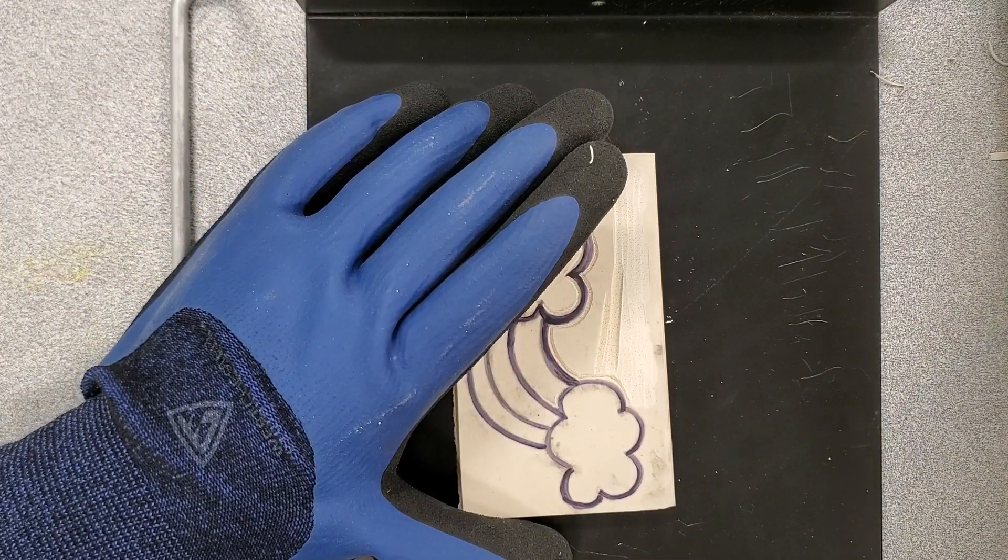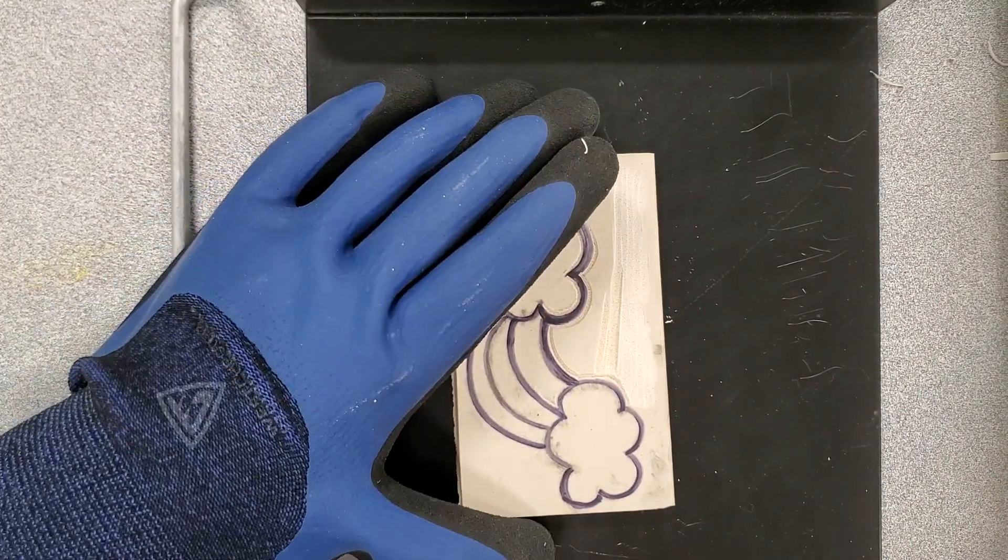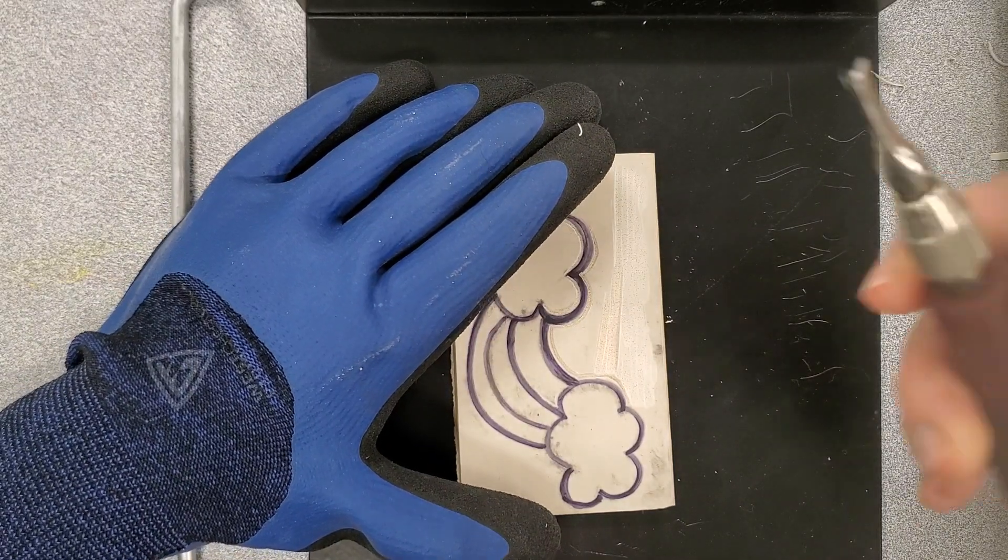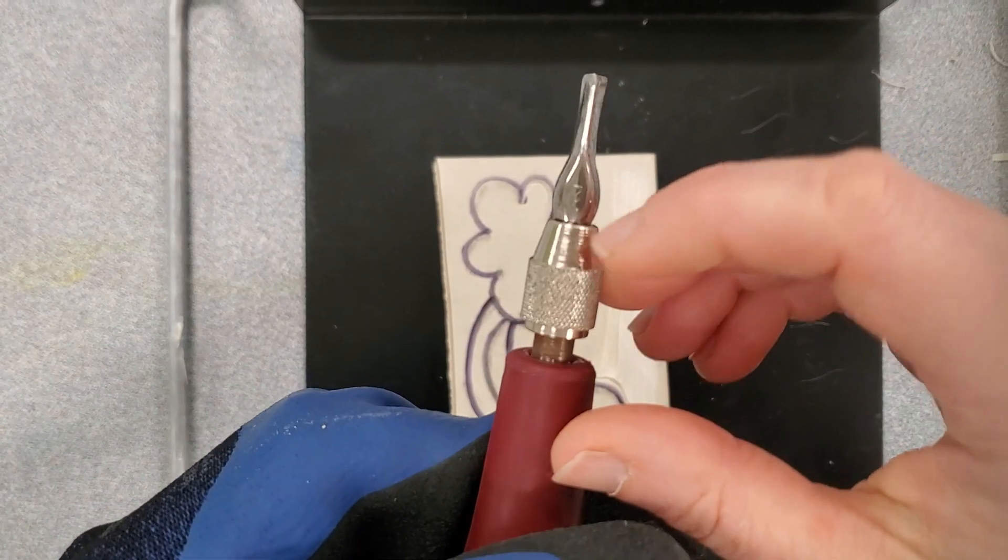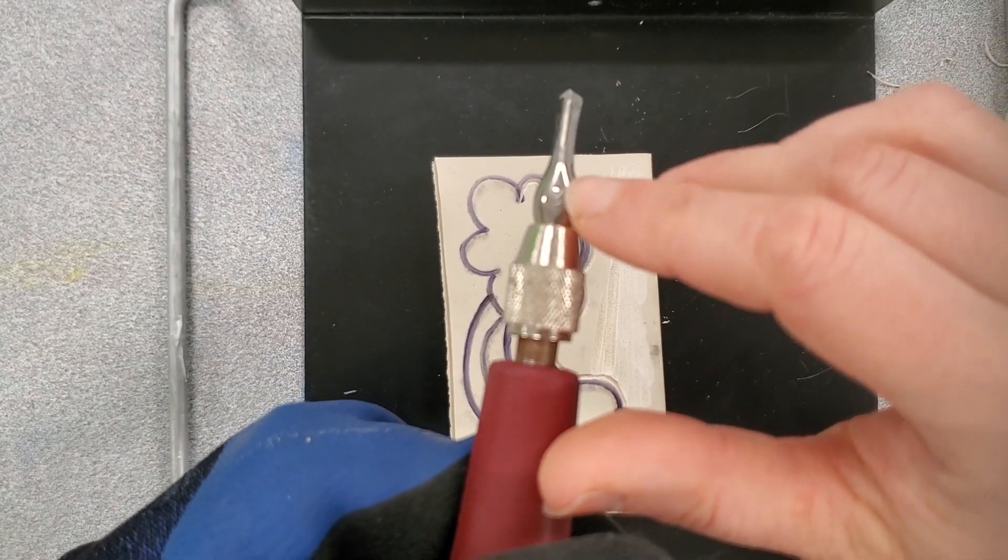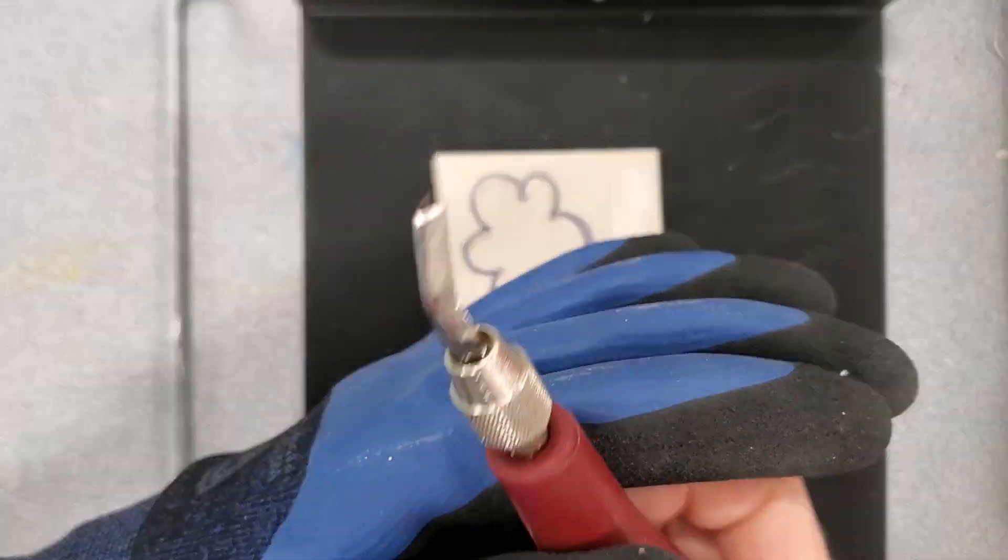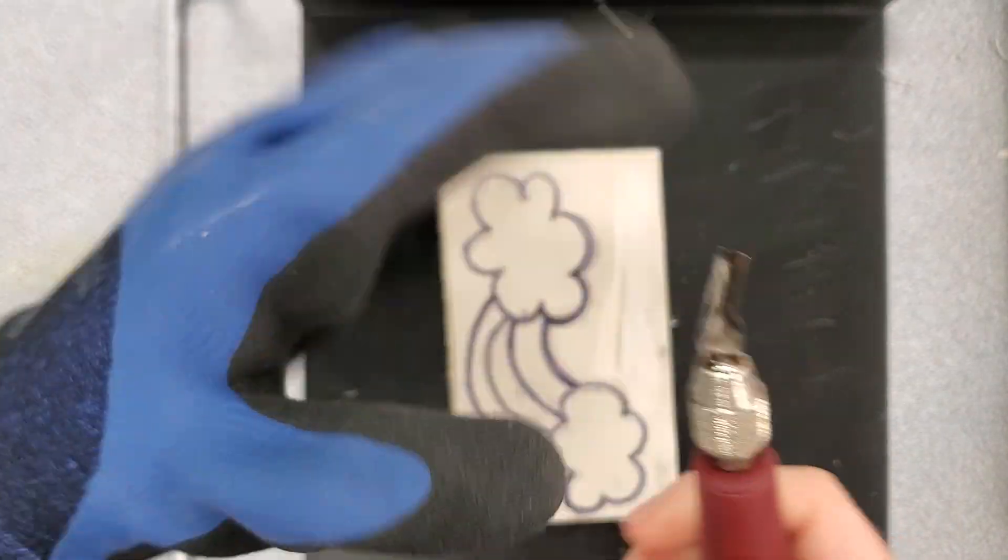First thing I'm going to do is I'm going to locate a number two tool. So with your tools, just a really quick reminder, on the back right here, there is a number, this one says two. I'm also going to try and color code the handles for you all.